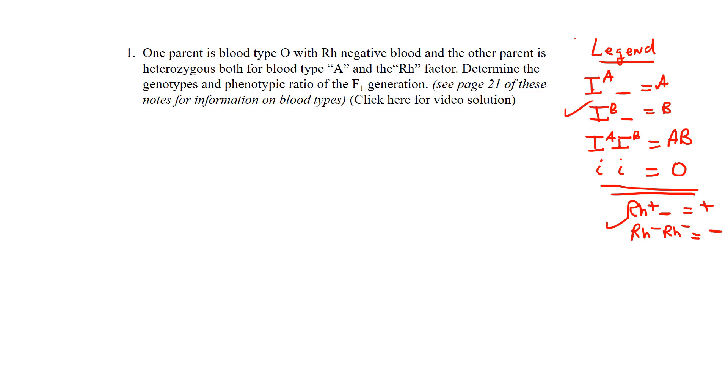Now that we have the legend, this is one legend that you'd probably be beneficial to memorize because there are lots of questions on blood typing. They love blood typing. Let's go through the question now. Underline the parent: one parent is blood type O with the RH factor, and that's crossed with another parent who's heterozygous for both blood type A and RH positive. I say RH positive because if it's hetero, positive has to be in there, and that makes that person positive blood.